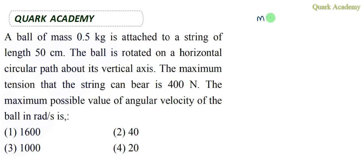There is a mass m equal to 0.5 kg connected to a string of length 50 centimeters, which is 0.5 meters. This mass rotates in a horizontal circular path. The string can hold a maximum tension of 400 newtons. We need to find the maximum angular velocity.